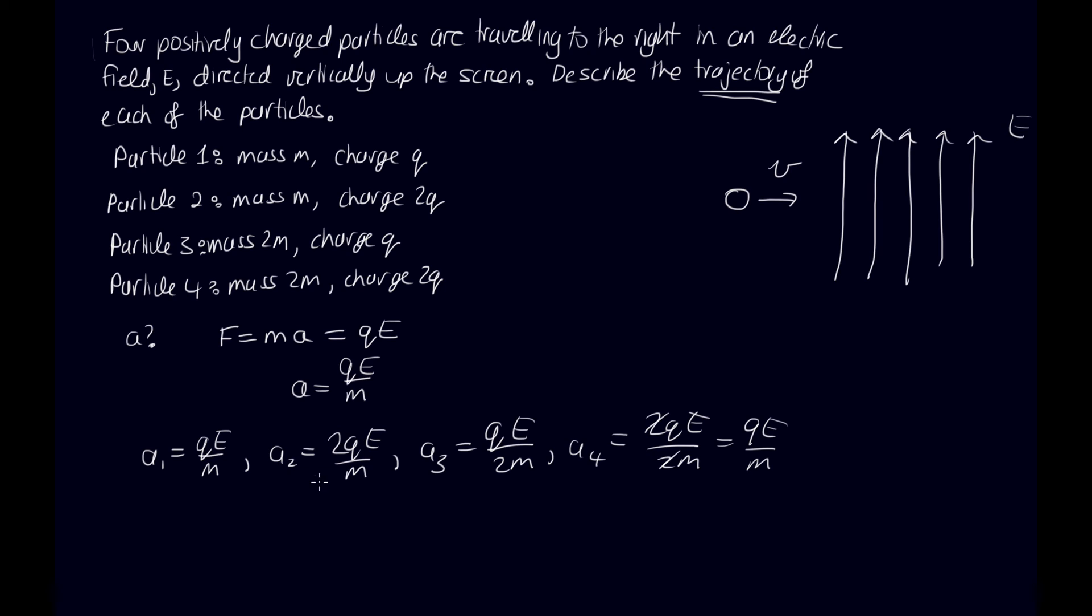So from this we can see, well, a2 is the biggest. It's got the biggest acceleration. And then a1 and a4 are the same. And then a3 has got the smallest acceleration, which isn't surprising. It's the heaviest with the same charge as particle 1.